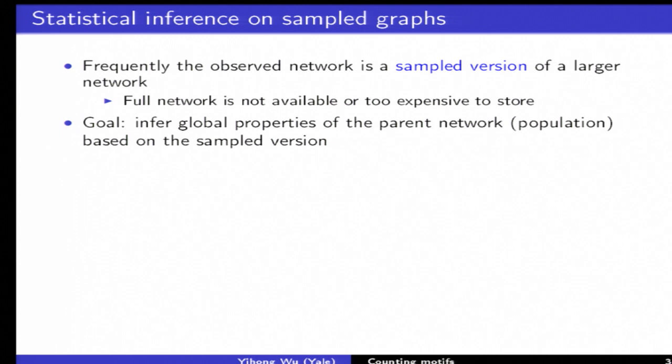Essentially in practice most graphs such as massive social network graphs are sampled versions of the underlying mother graph which is not observed. What we have access to is only a partial observation and the goal is to infer about the parent graph based on the sampled version.